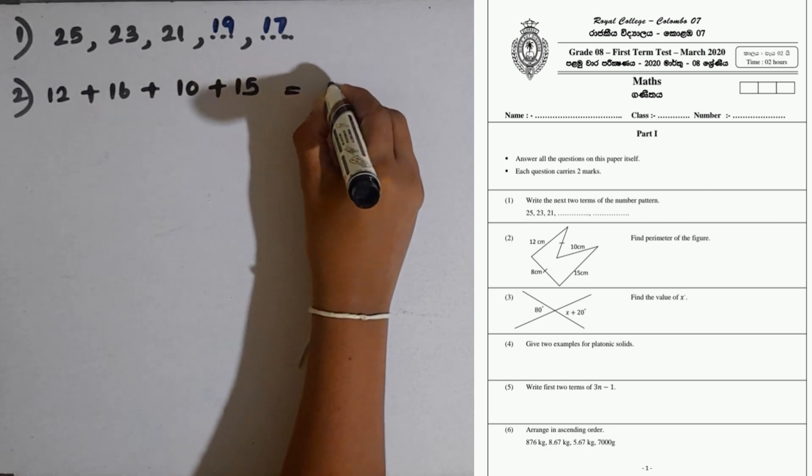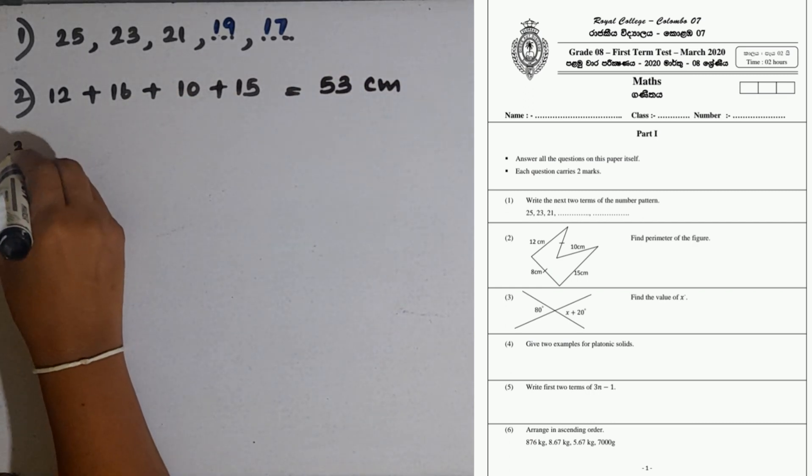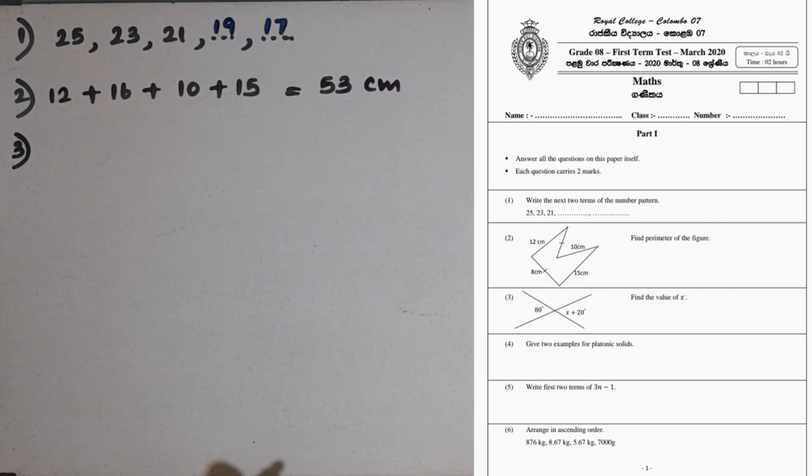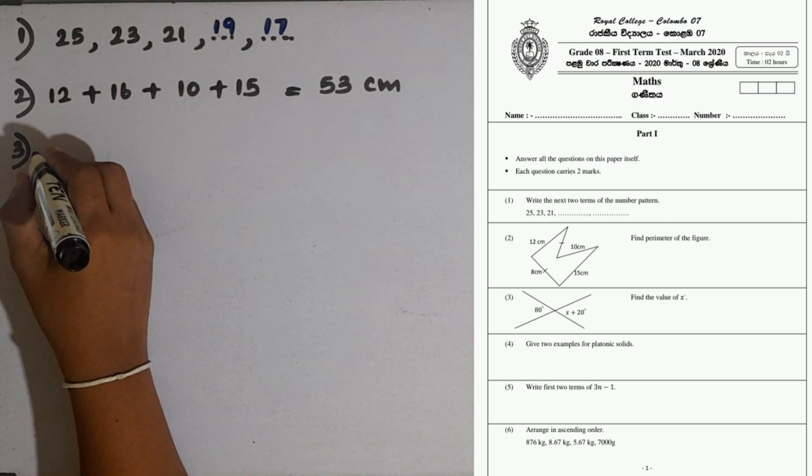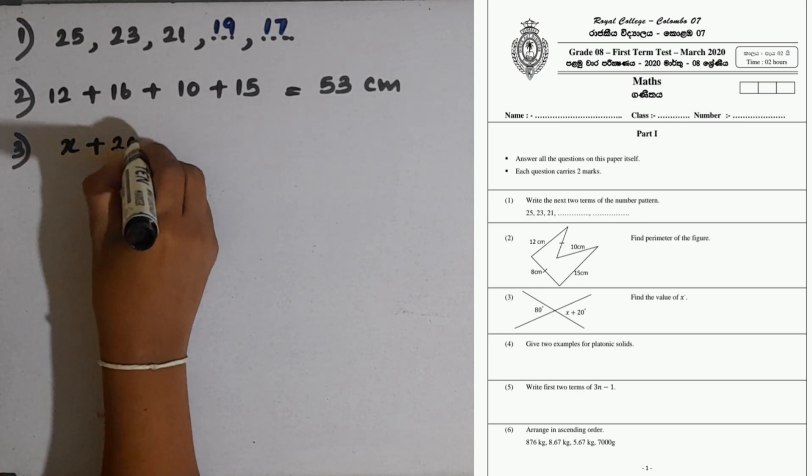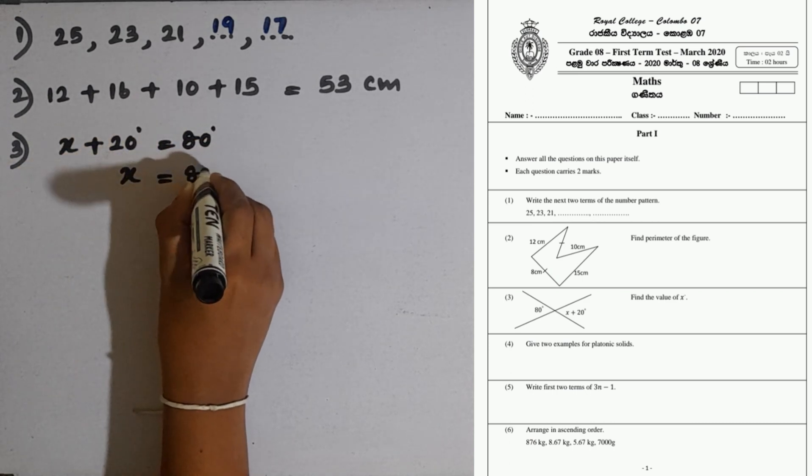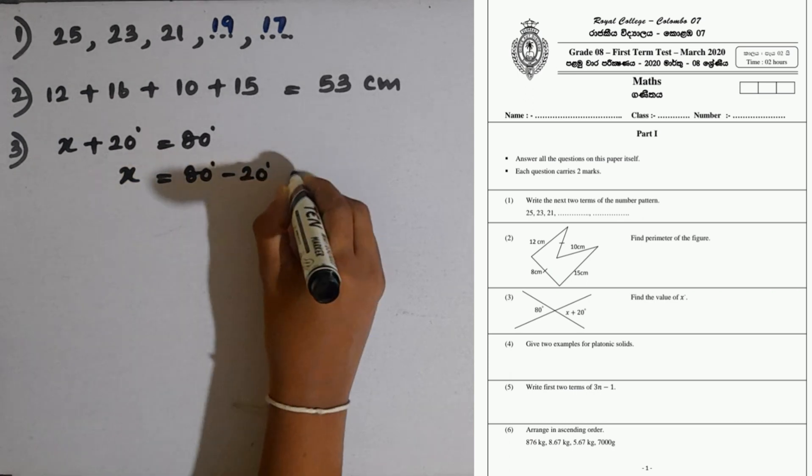The total is 53 centimeters. Then question number 3. Find the value of x. As the given two lines are straight lines, vertically opposite angles are formed here. There are two pairs, one can be taken as the given two angles, so we can equal x plus 20 degrees equal to 80 degrees. Then x equals 80 minus 20, that is 60 degrees.